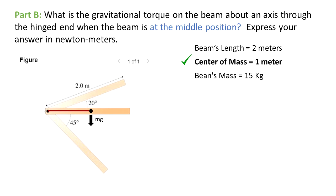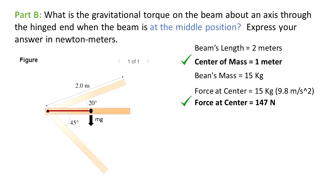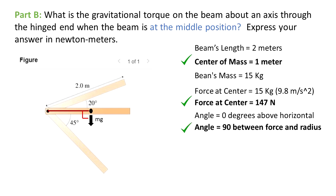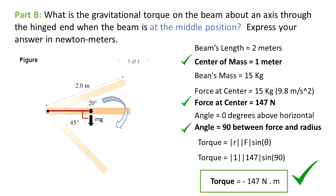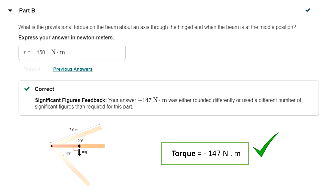The beam's mass is still 15 kg and the force of gravity is the same, 147 N. As we can see, the angle between the radius and the force of gravity is now 90 degrees. Torque equals magnitude of radius × magnitude of force × sine of the angle between them. The torque is at its maximum: negative 147 Nm. This is the highest torque we can get for this case. The textbook answer was negative 150 Nm due to the number of significant figures used, but our answer is more precise.